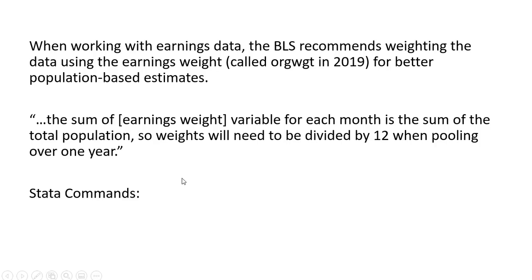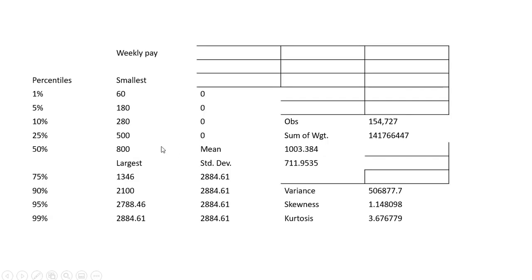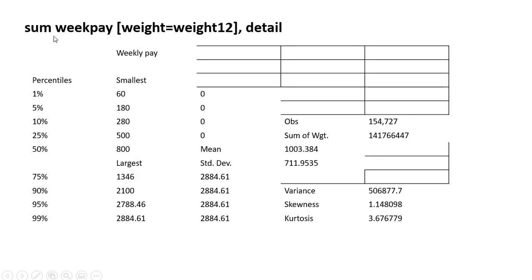Here are the STATA commands. I'm going to generate a new weight variable called weight12, which is the earnings weight divided by 12. Now I'll run the command. Our variable of interest is weekpay, which is weekly earnings. We're weighting the data and we get the following results.